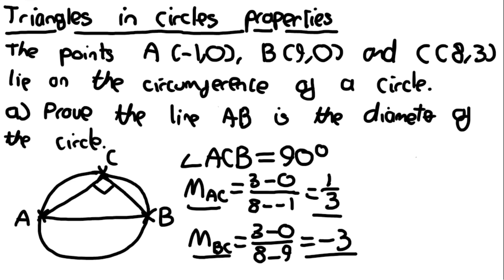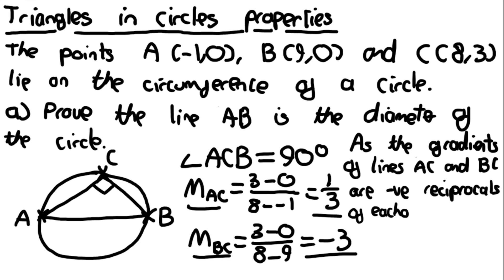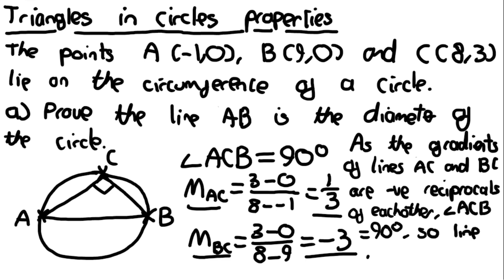Since this is a proof, a concluding sentence is required. We write: as the gradients of lines AC and BC are negative reciprocals of each other, angle ACB is equal to 90 degrees, so the line AB is the diameter. That is an acceptable concluding sentence, and therefore we have proved that AB is the diameter.